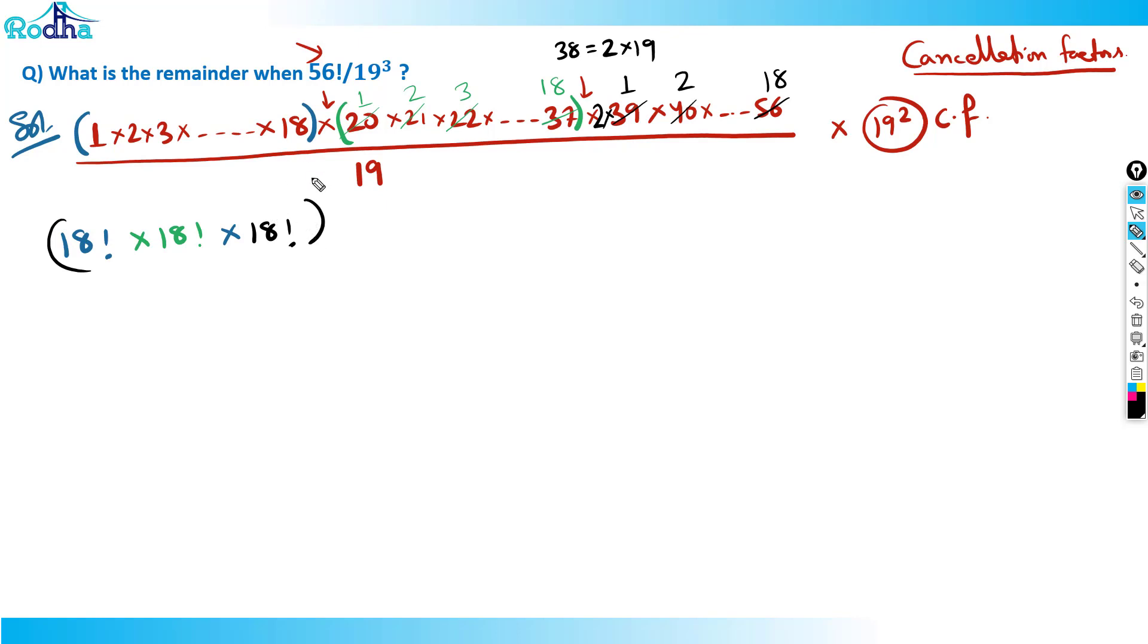This is what I want. Now divide by what? Divided by 19. This remainder I am finding, and obviously at the end multiply by 19 square. Now what am I getting? 18 factorial cube divided by 19, into 2 also, into 19 square. That's the cancellation factor.